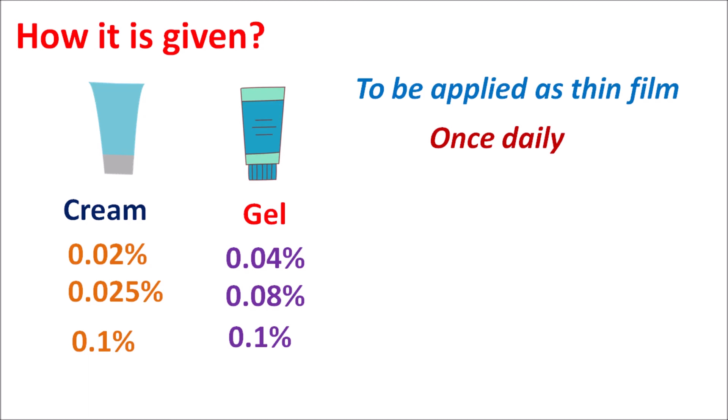In summary, Tretinoin is a topical medication indicated for the treatment of acne as well as wrinkles. It is a Vitamin A derivative, chemically called an all-trans retinoic acid derivative, available as a cream as well as gel. When applied on the skin, it can produce skin irritation, dryness, and redness, but by taking careful precautions, this can be minimized. This drug reduces acne formation by increased detachment of cornified cells and increased shedding of keratinocytes, and it can also affect pigmentation, often producing hypopigmentation. Hope you have enjoyed this video — please subscribe to our channel, share this video with your friends, and post your comments in the comment box.